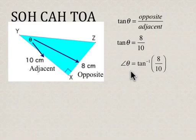So angle theta is equal to the inverse tan of 8 over 10. If you do this correctly on your calculator, you should get an answer of 39 degrees.